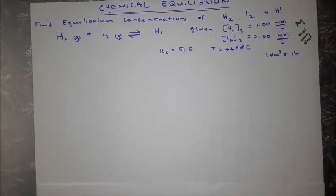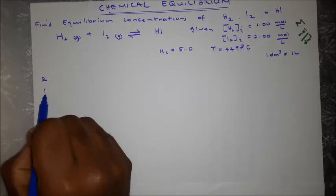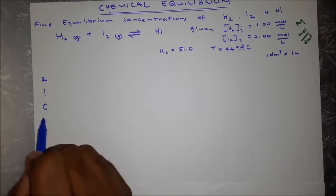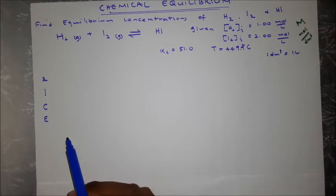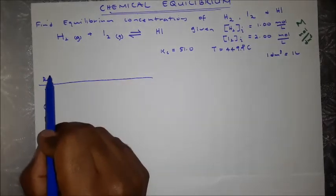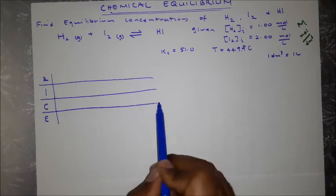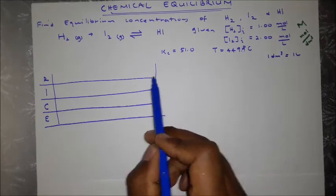Take note that we are given concentrations here, not moles as in previous examples. We set up our ICE table with rows for Initial concentrations, Change in concentrations, and Equilibrium concentrations. University students often call this the ICE table; grade 12 students may know it as the RICE table — it's essentially the same thing.